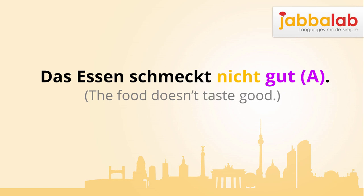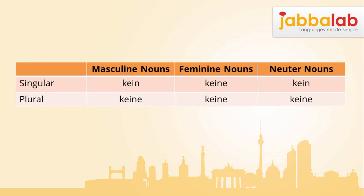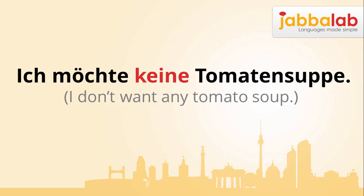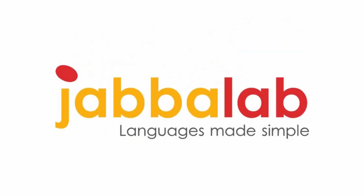In German, you use a separate negative form of the indefinite article which is formed exactly like 'ein'. The difference is that the negative form also has plural forms. You always use 'kein' if it's in direct relation to a noun. For example: 'ich habe kein Besteck', 'ich möchte keine Tomatensuppe'. When you first use these it will be confusing, but don't worry — you will pick it up quickly and it will soon become instinctive.